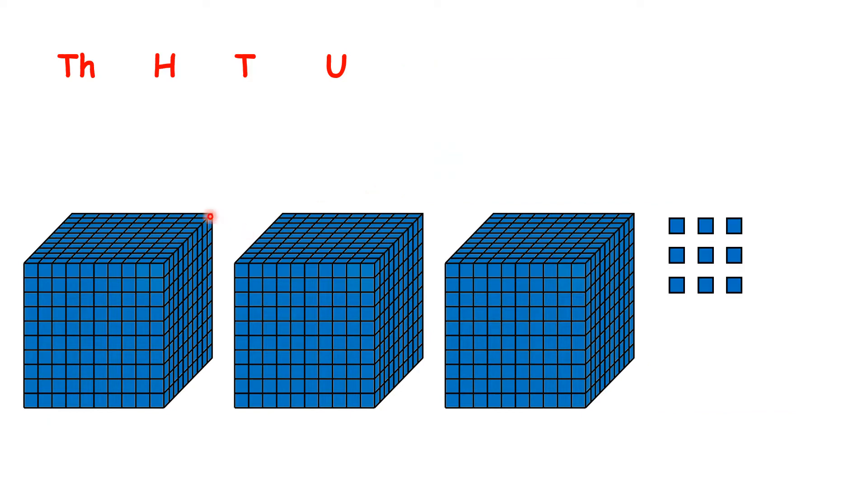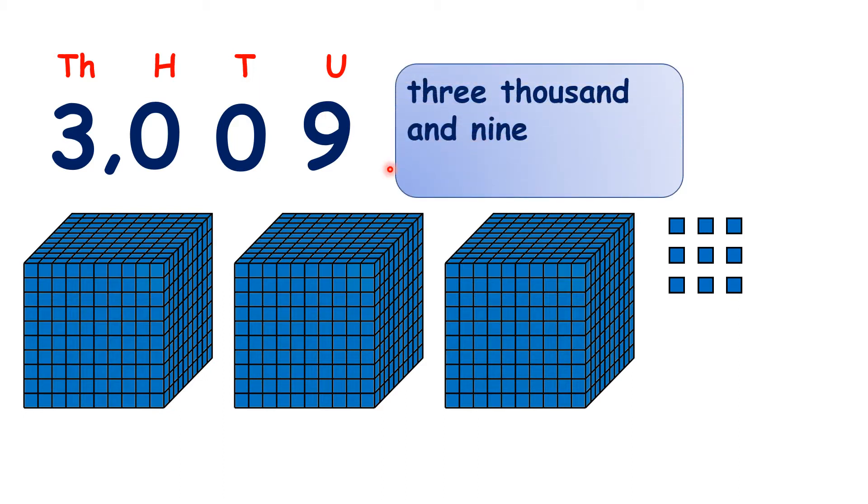So what do we have here? We have three thousands, no hundreds, no tens and nine units. So we have the number three thousand and nine. And you can see why these zeros are really important as placeholders. If we ignored the zeros we would have the number thirty-nine and we can see here the number three thousand and nine is much much bigger than the number thirty-nine.